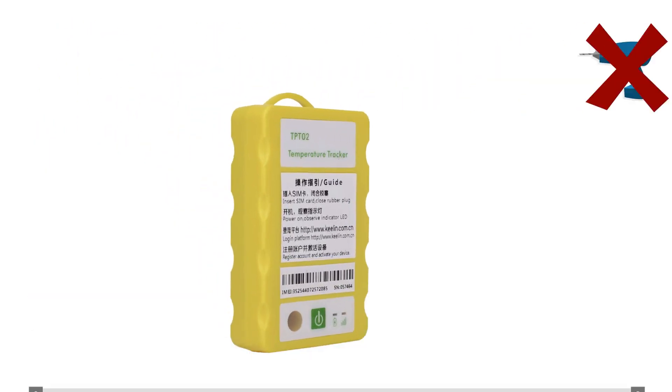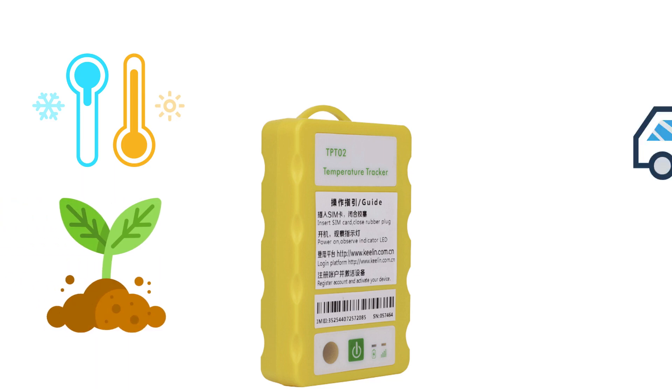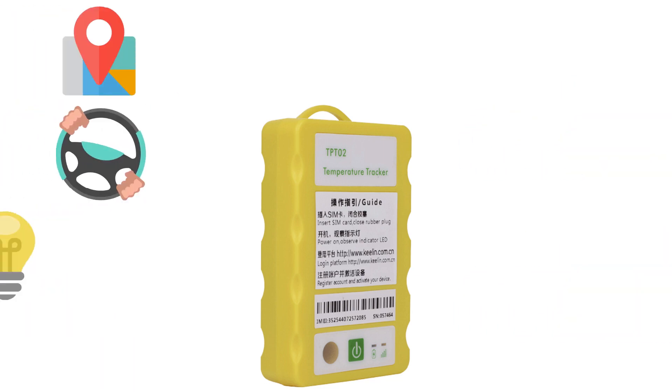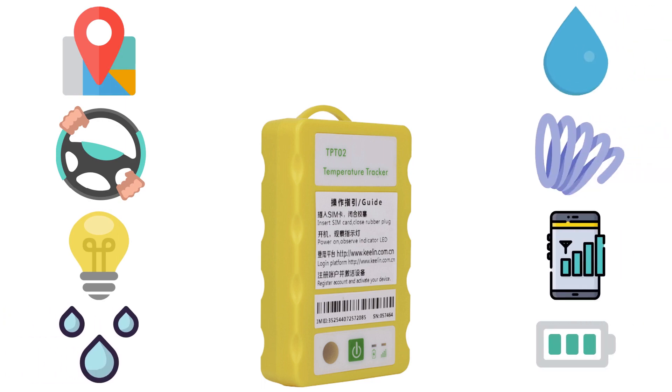The device will monitor not only the temperature of the cargo, environment, and vehicles in the entire fleet, but also the location, driving behavior, light, humidity, drop, motion, phone signal, battery levels of TPT02 devices, and more parameters.